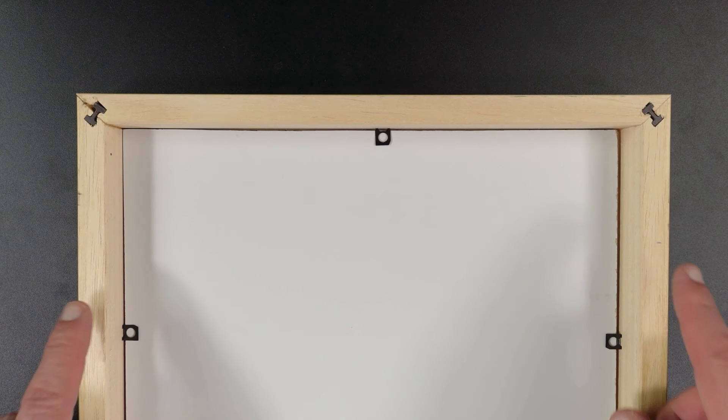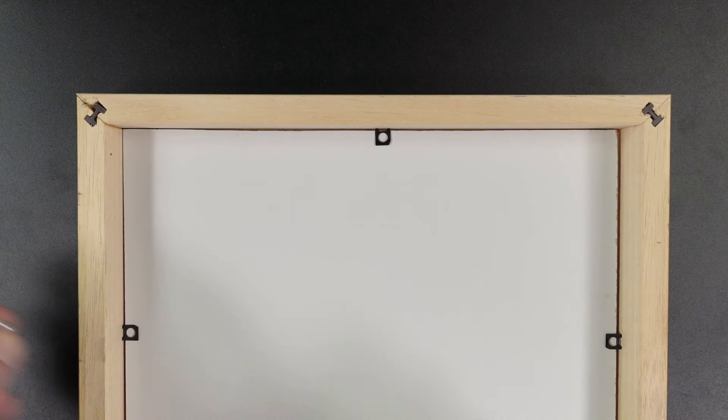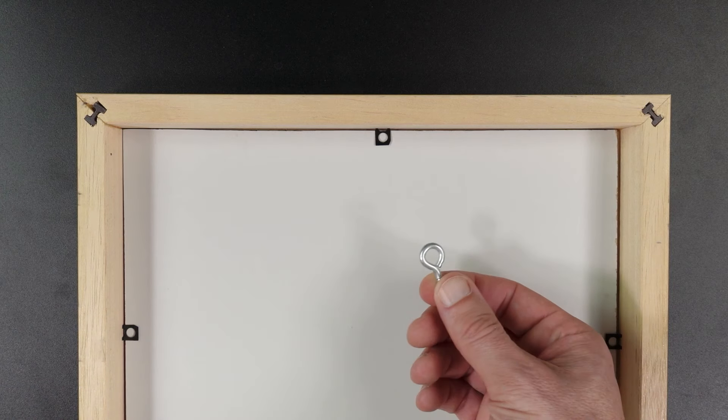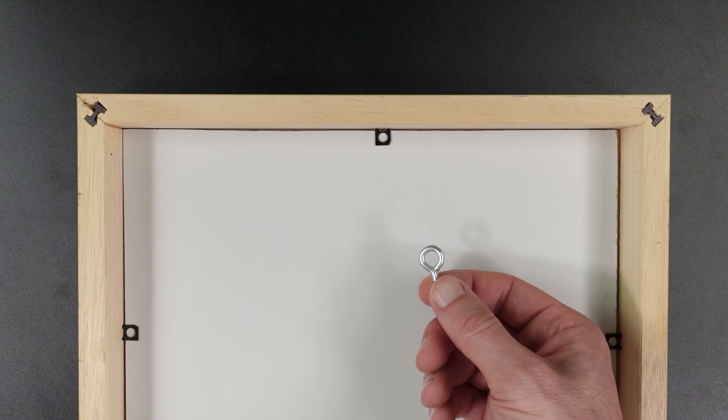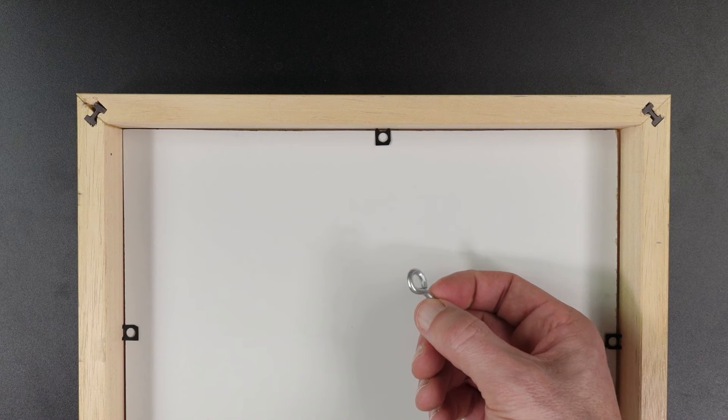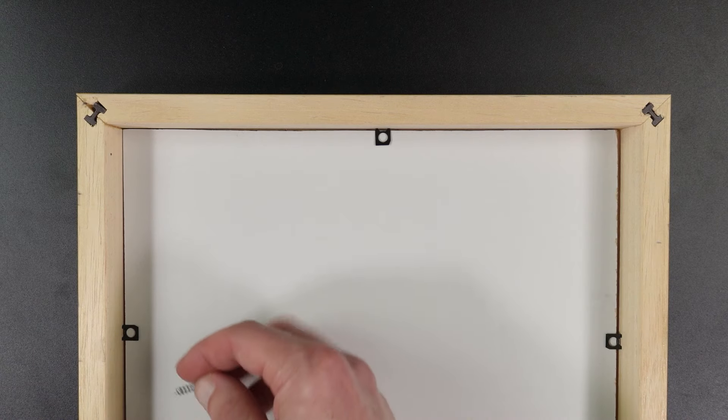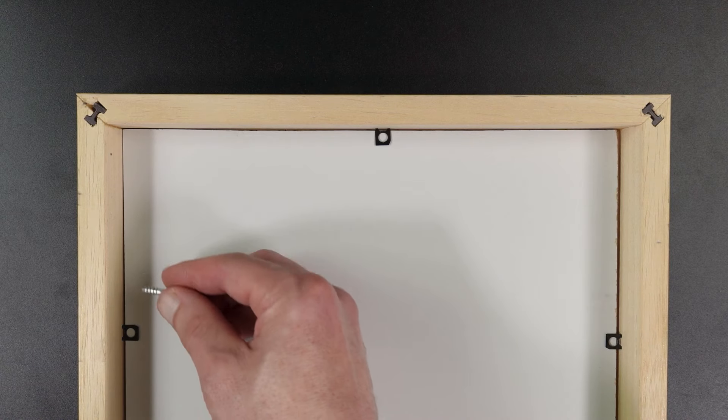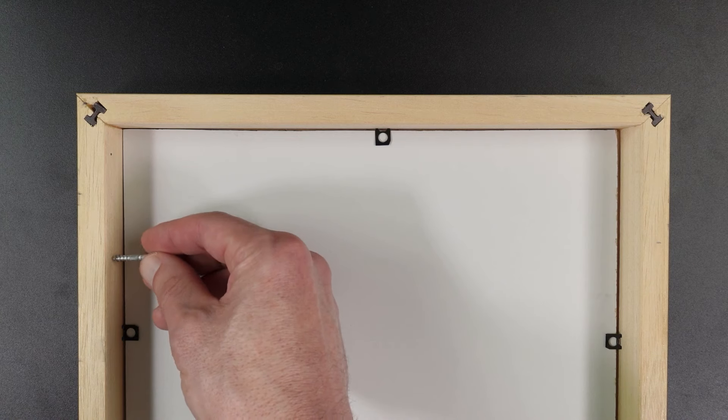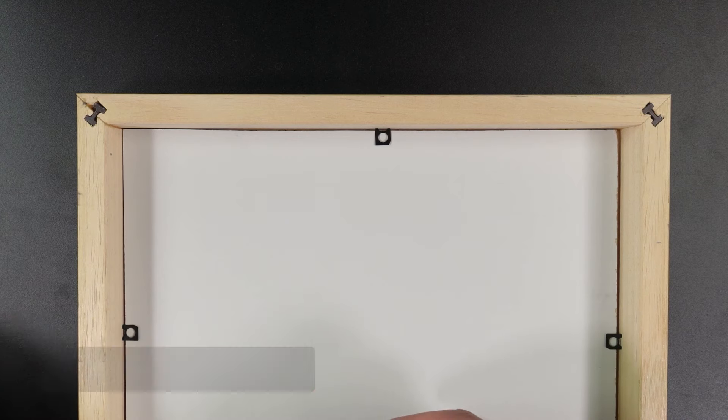Before you can attach the wire to the frame, you need some hardware to attach it to. In my last video I used a small i-hook like this, and that works fine for small paintings. One of the issues you'll run into is that if the frame is shallow, there's not enough room to put an i-hook in there. So the other option is to use a d-ring.